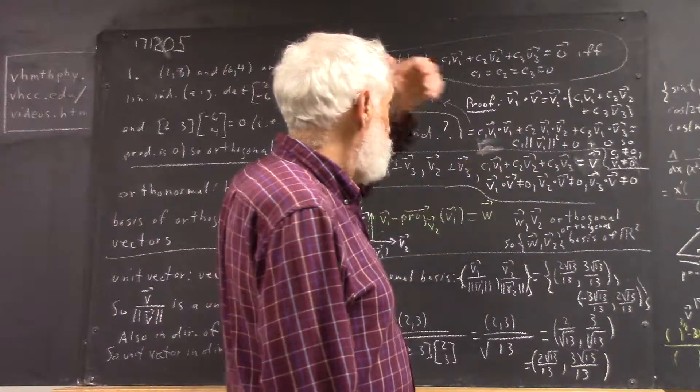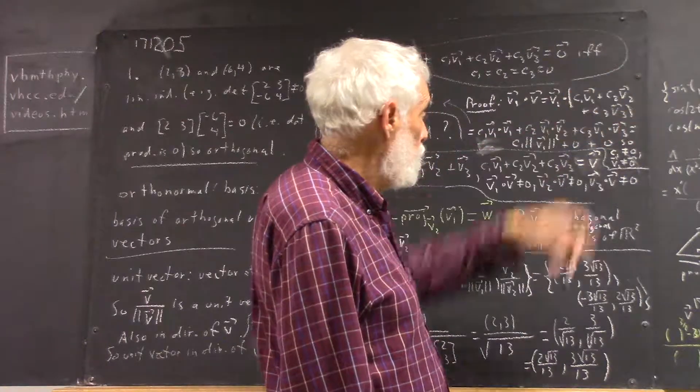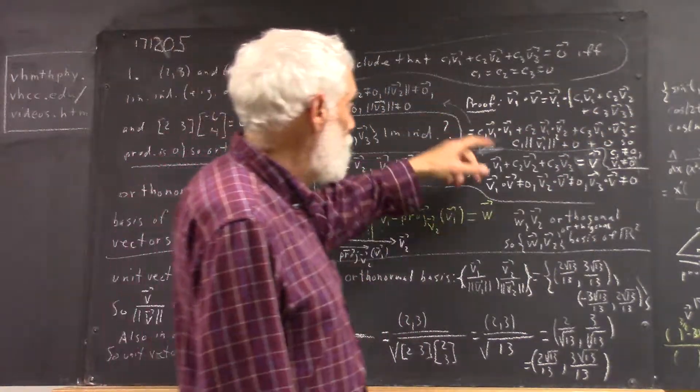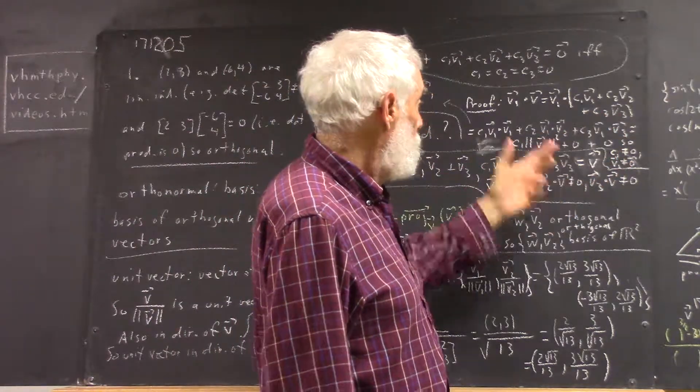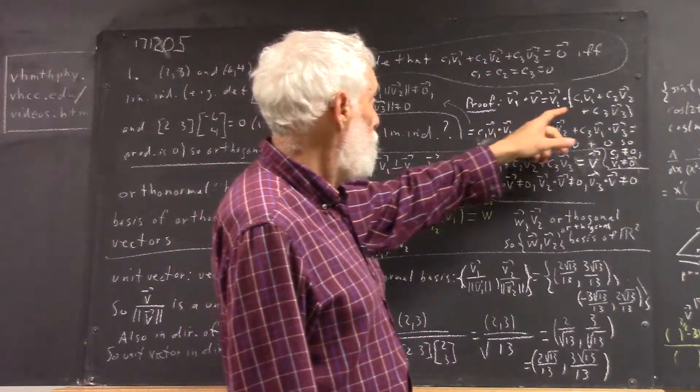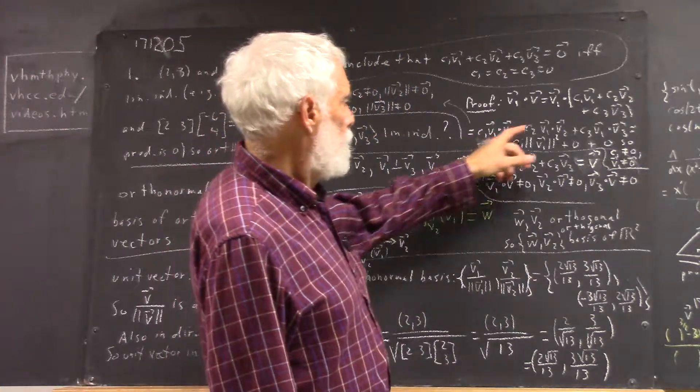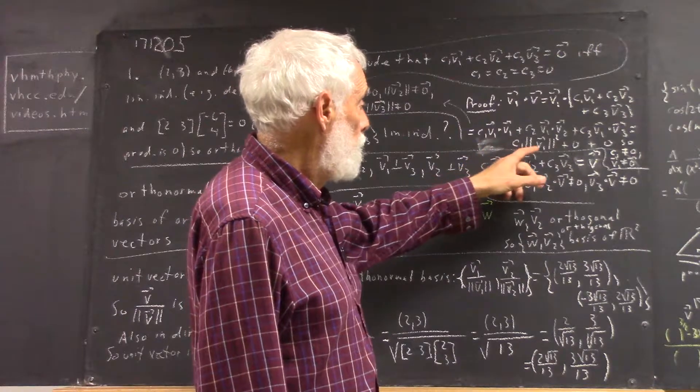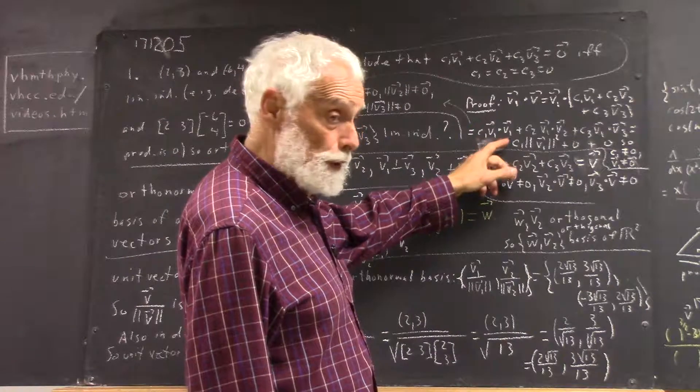Okay, well the proof: First of all, v1 dot v is v1 dot (c1·v1 plus c2·v2 plus c3·v3). And that comes out, since v1 dot v2 and v1 dot v3 are both zero, the only thing that's nonzero is the v1 dot c1·v1. So this sum that we get here is just c1 times the magnitude of v1 squared.